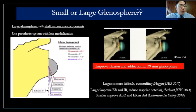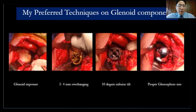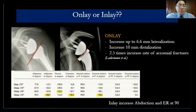A larger glenosphere gives better external and internal rotation, while a smaller glenosphere gives better abduction. For the onlay vs. inlay system, products like Zimmer Biomet now have an onlay option in the same system. With onlay, you remove less bone. I prefer the onlay system — it has more lateralization and better range of motion compared to inlay. However, there is a higher chance of acromion stress fracture with onlay.